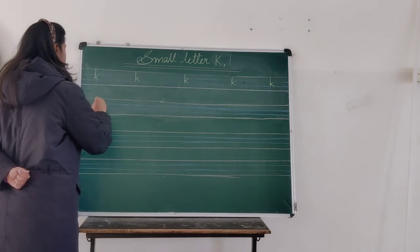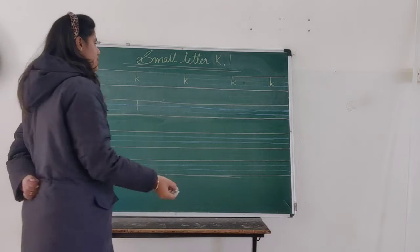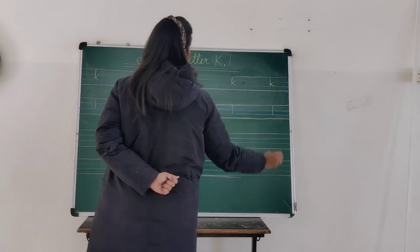L for lawyer. For L for lawyer, we have to row one standing line, standing line, standing line and standing line.